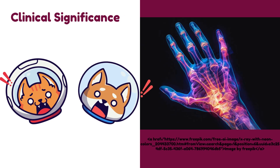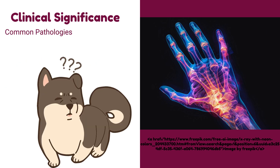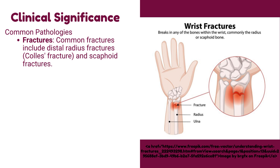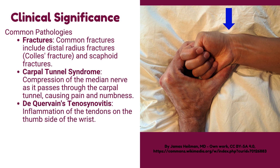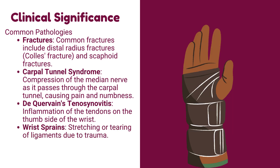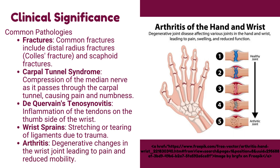Clinical significance of the wrist joint. Common pathologies include: fractures — such as distal radius fractures, Colles' fracture, and scaphoid fractures. Carpal tunnel syndrome: compression of the median nerve as it passes through the carpal tunnel, causing pain and numbness. De Quervain's tenosynovitis: inflammation of the tendons on the thumb side of the wrist. Wrist sprains: stretching or tearing of ligaments due to trauma. Arthritis: degenerative changes in the wrist joint leading to pain and reduced mobility.